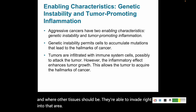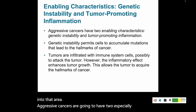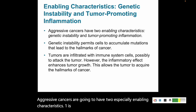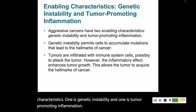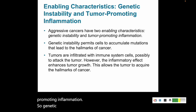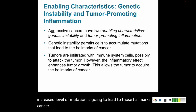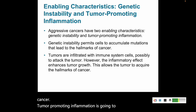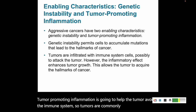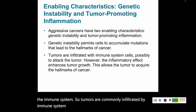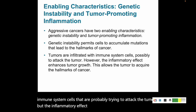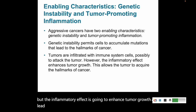Aggressive cancers have two especially enabling characteristics: genetic instability and tumor-promoting inflammation. Genetic instability lets them pick up mutations, and an increased level of mutation leads to the hallmarks of cancer. Tumor-promoting inflammation helps the tumor avoid the immune system. Tumors are commonly infiltrated by immune cells that are probably trying to attack the tumor, but the inflammatory effect ends up enhancing tumor growth and contributing to the hallmarks of cancer.